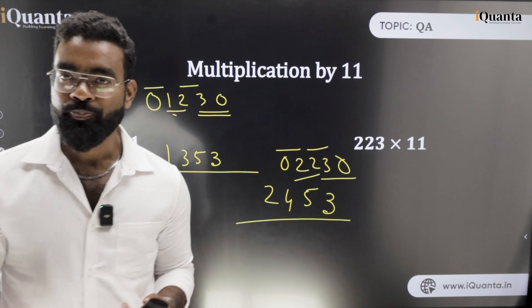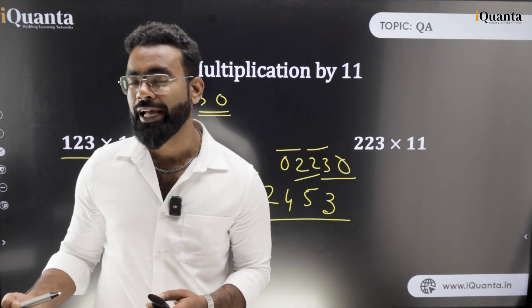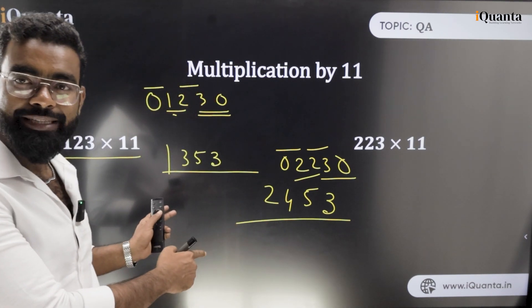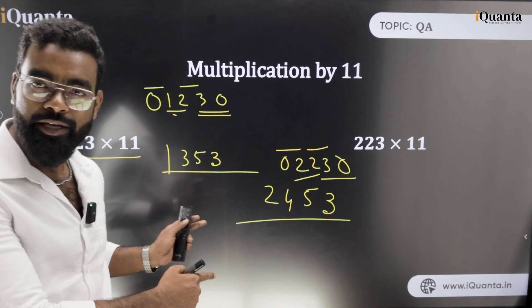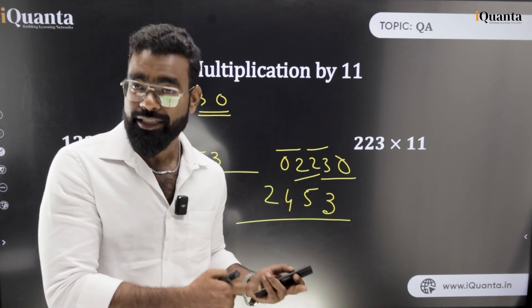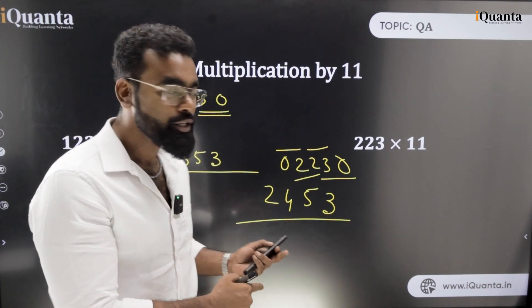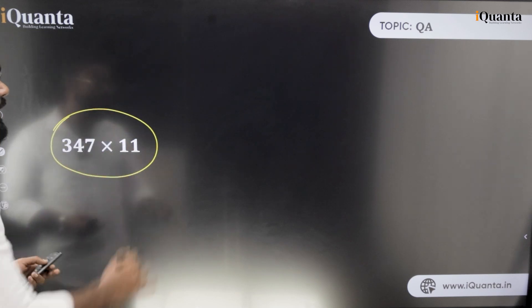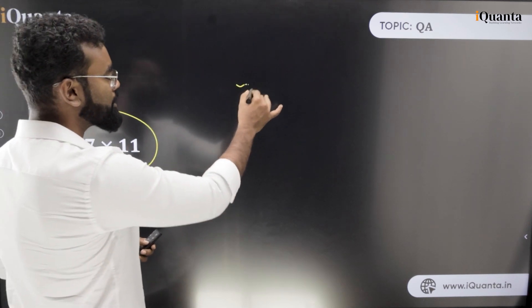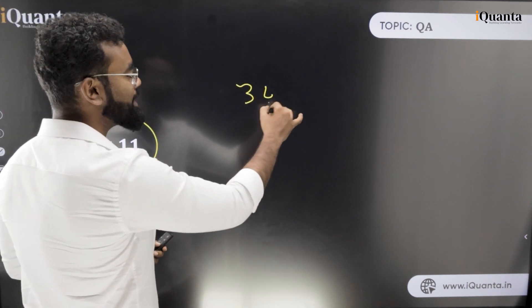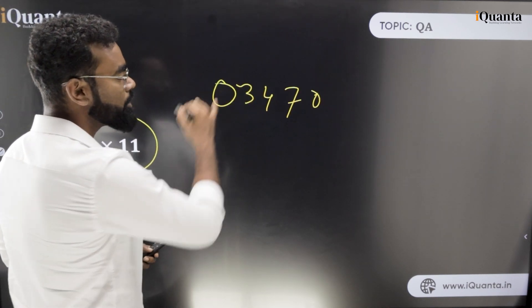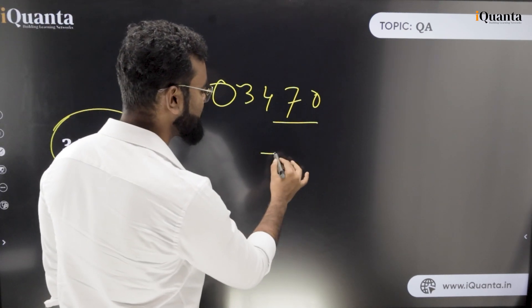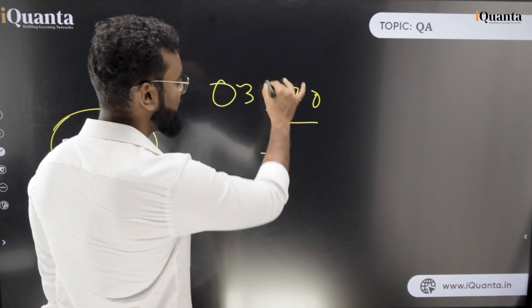Now there is a catch. In those examples there was no carryover, but now I will discuss something which has carryover. Let's do 347 into 11. The method is exactly the same — add a 0 on each side. First: 7 plus 0 is 7.